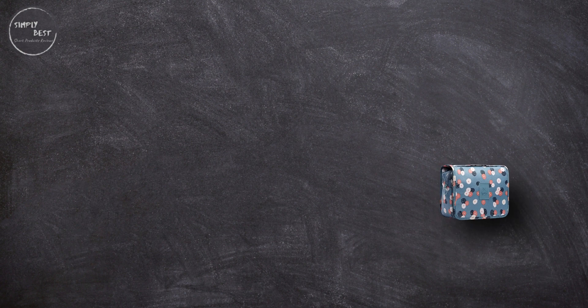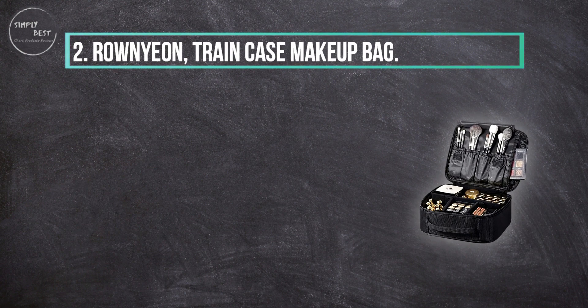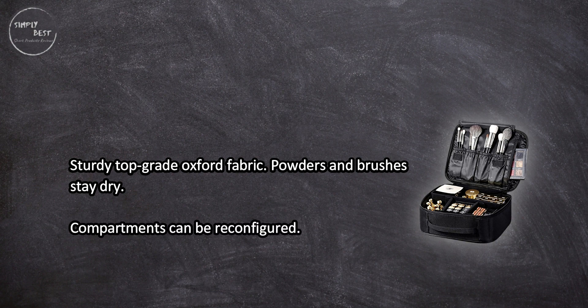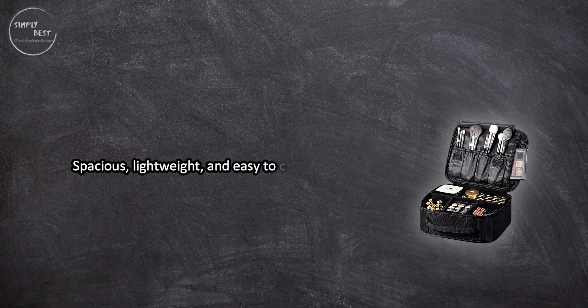Here at number two: Roni on train case makeup bag. Sturdy top grade Oxford fabric, powders and brushes stay dry. Compartments can be reconfigured, spacious, lightweight, and easy to clean. Compartments and pockets accommodate a variety of items.